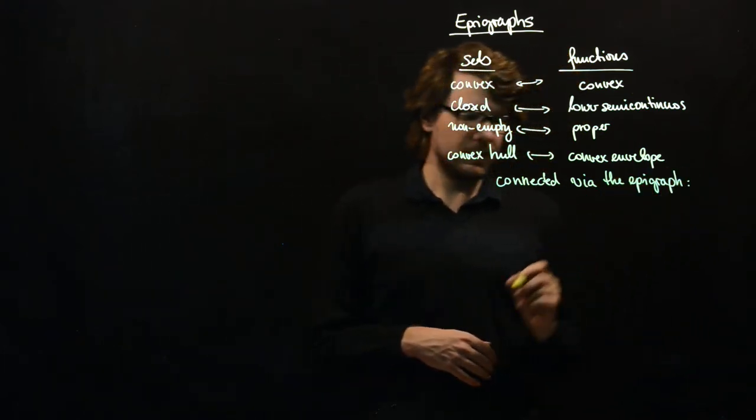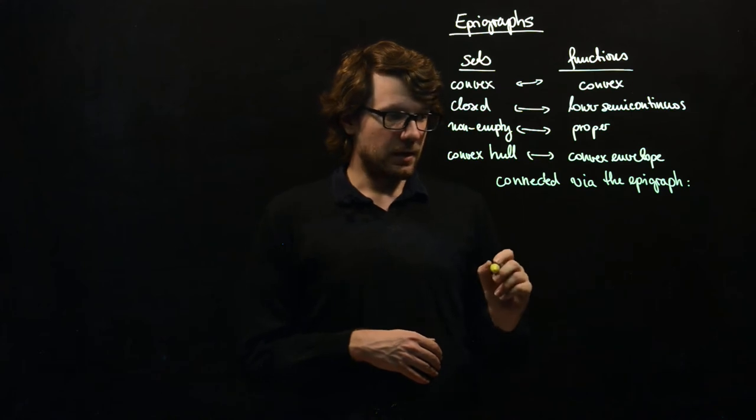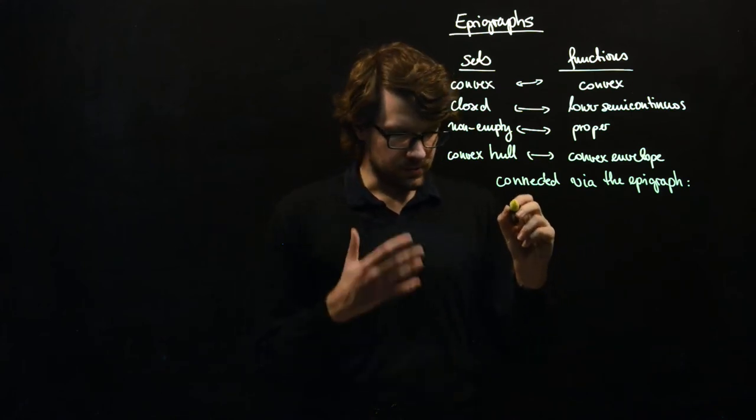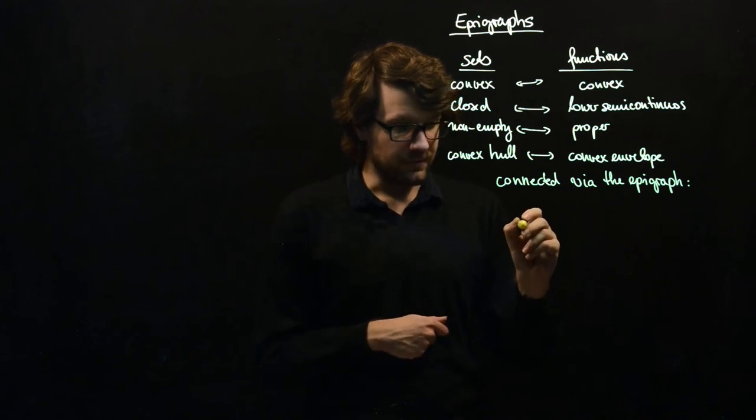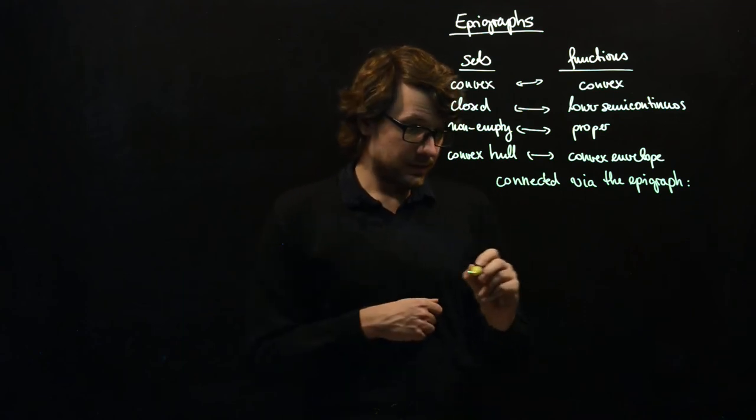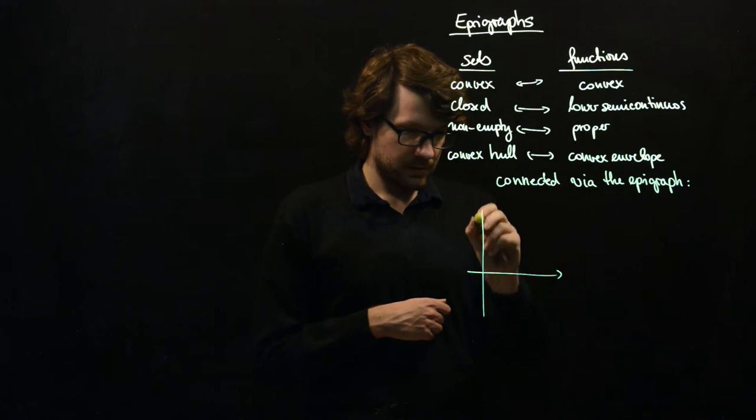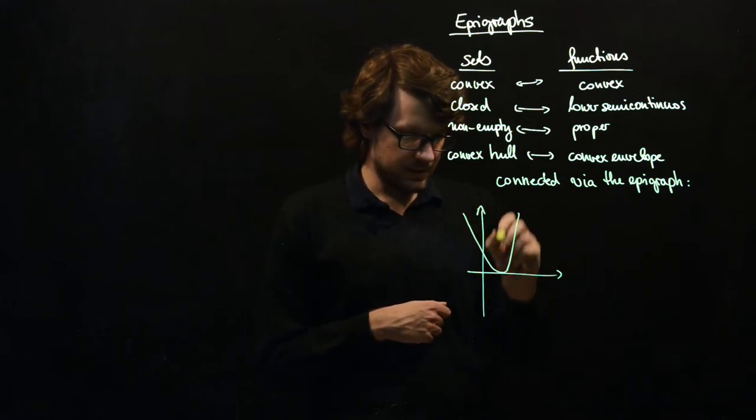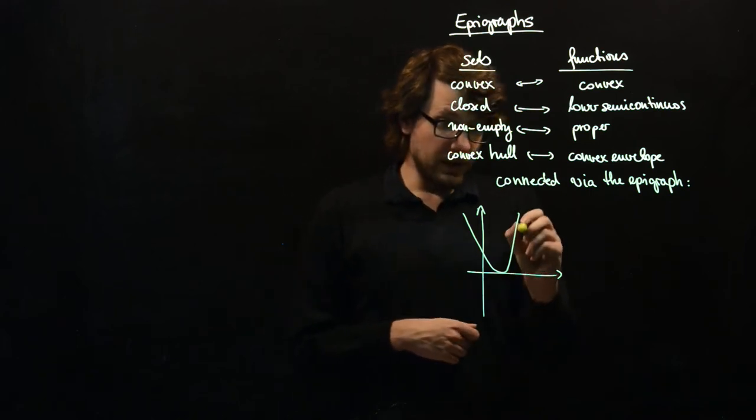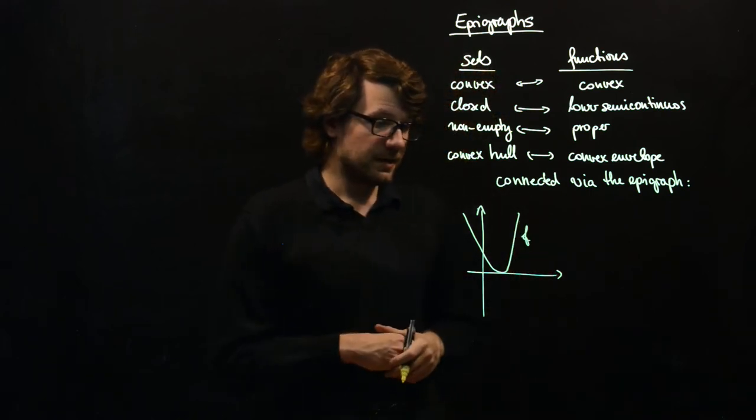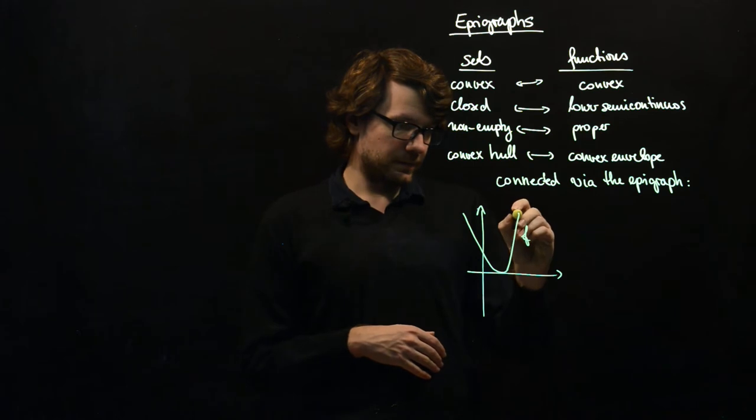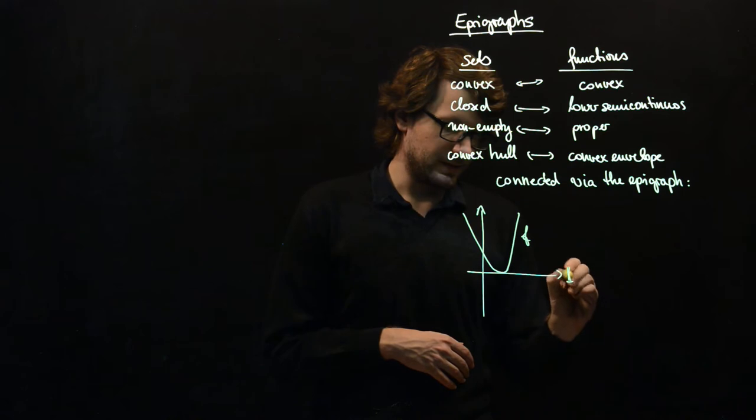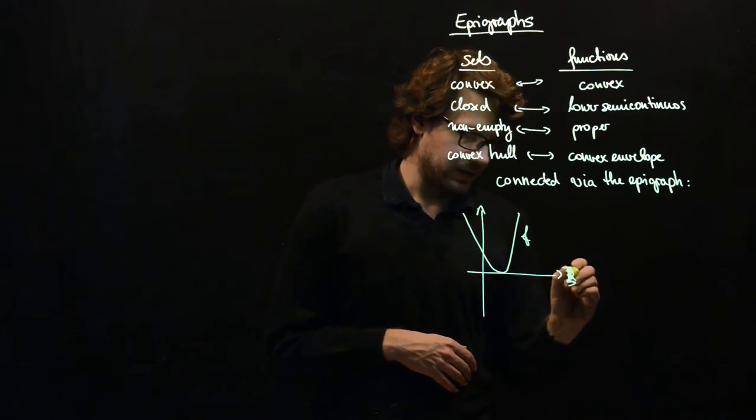Okay, let's first draw a picture. So we see what the epigraph is geometrically. So you might draw some convex function here. So if you call this function f here, then you see that you have the graph of the function, which is basically a set in, not Rn.